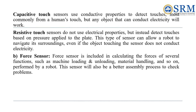Capacitive sensors identify touches using conductivity, often responding to human touch or any conductive object. In contrast, resistive touch sensors recognize touch through pressure on the surface, enabling robots to sense their surroundings regardless of an object's electrical conductivity.